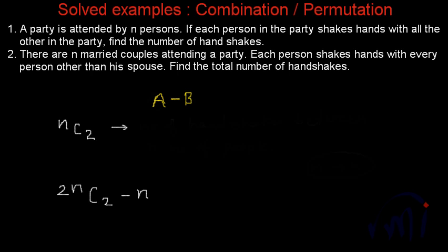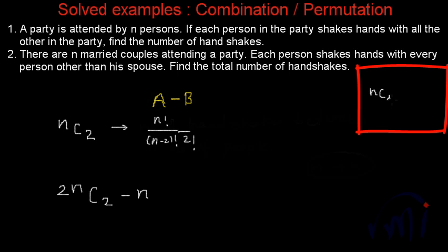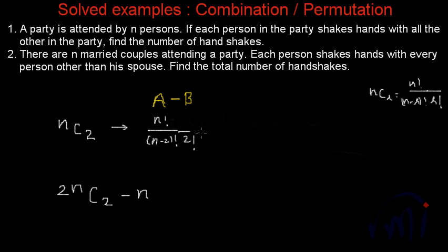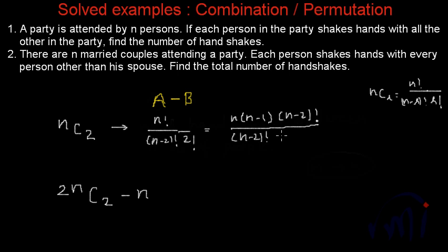nc2, which is the answer for the first case, can be written as n factorial divided by (n minus 2) factorial divided by 2 factorial. The formula for ncr is n factorial divided by (n minus r) factorial divided by r factorial. So nc2 equals n factorial divided by (n minus 2) factorial divided by 2 factorial. Now n factorial can be written as n multiplied by (n minus 1) multiplied by (n minus 2) factorial, divided by (n minus 2) factorial and 2. The (n minus 2) factorials cancel, giving n into (n minus 1) divided by 2.